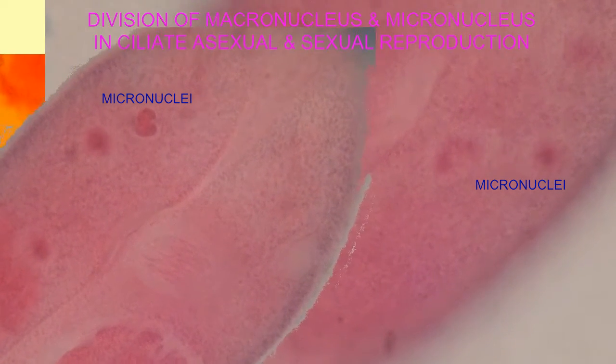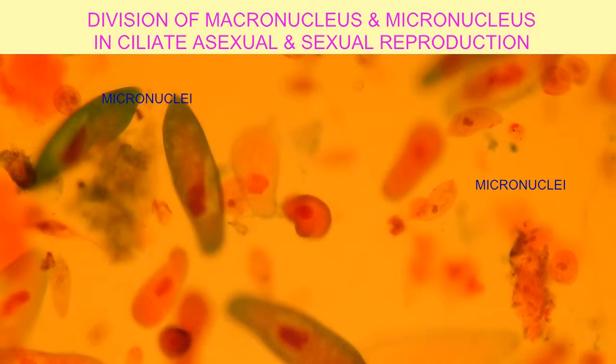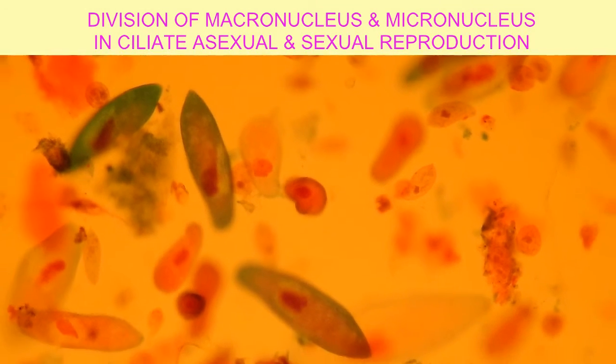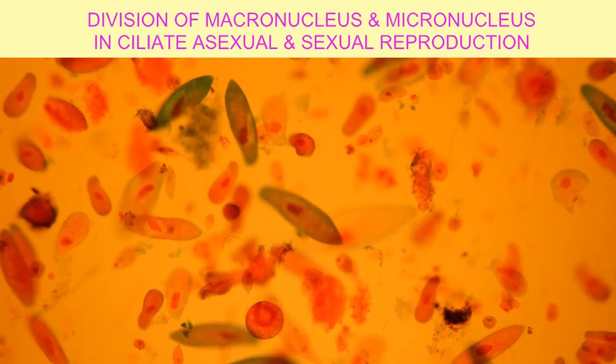The previously existing macronucleus will break down, and thus macronuclei and micronuclei have differing roles in sexual and asexual reproduction.